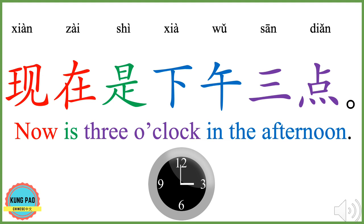现在是下午三点。 现在 means now. 是 means is. 下午 means afternoon. 三点 means three o'clock. 三 means three. 点 here means o'clock. 现在是下午三点 means now is three o'clock in the afternoon. Now your turn.